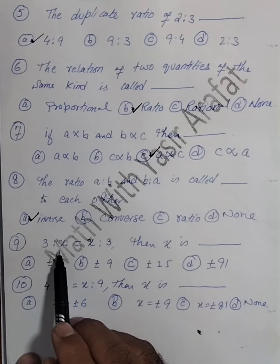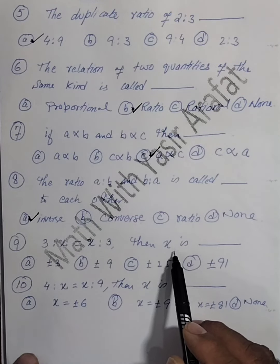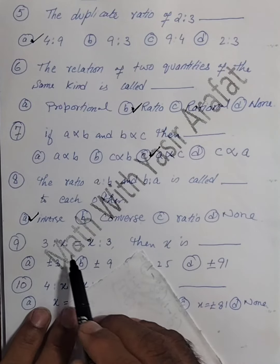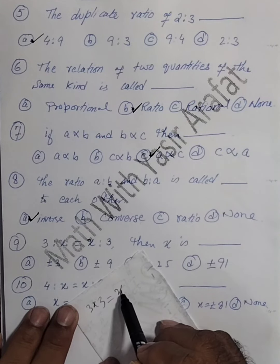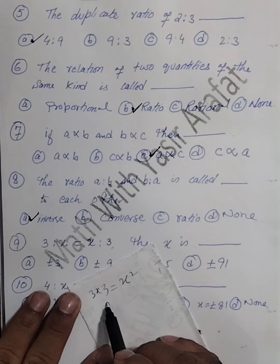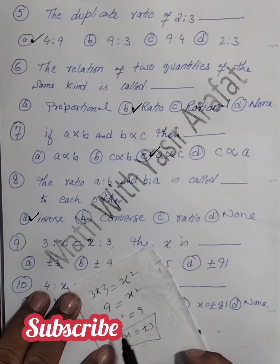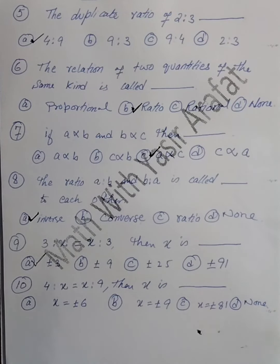Now here this is 3 ratio x equals x ratio 3. Then what will be the value of x here? So again we have to use the same strategy here. The product of extremes equals the product of means. So x times x is x squared, x squared equals 9, and x equals plus minus 3. So the correct option is a which is plus minus 3.